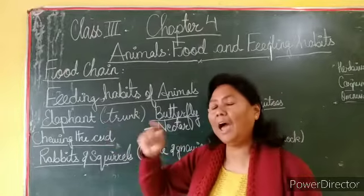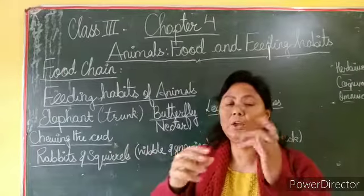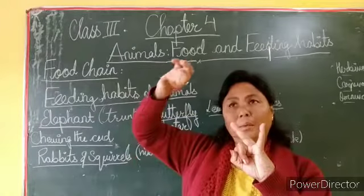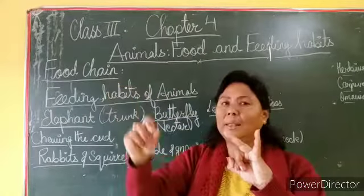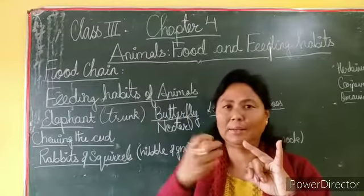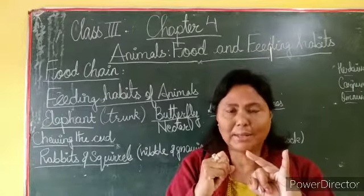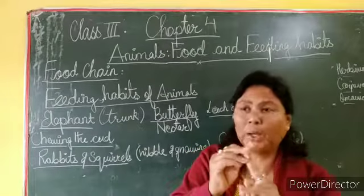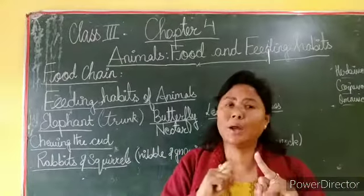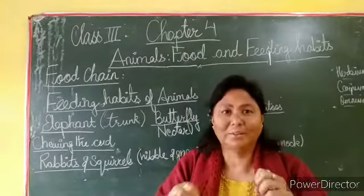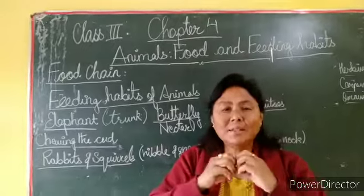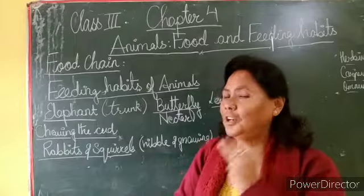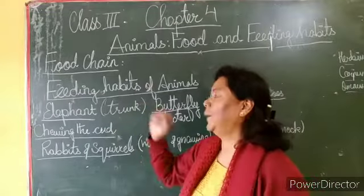The elephant uses its trunk for three things. Number one: to carry logs. Number two: it breaks branches and takes them to its mouth and eats the leaves or grass - whatever comes under plants. Number three: with the help of its trunk, it draws water up into its trunk and drinks. So the trunk serves as a long nose and hand.